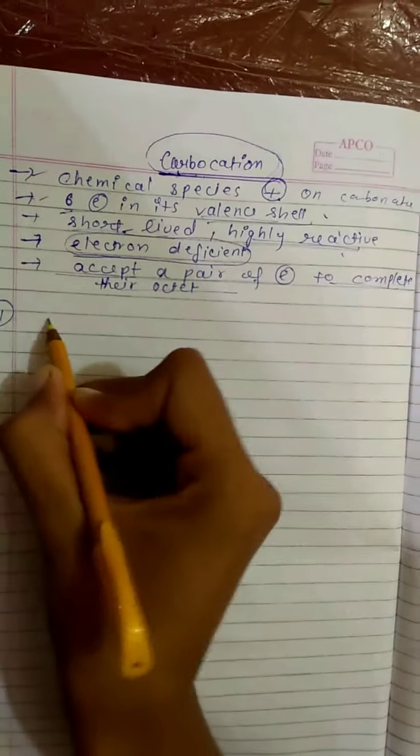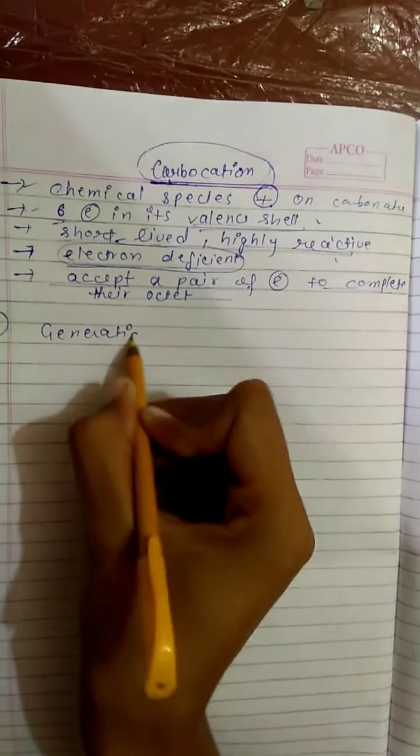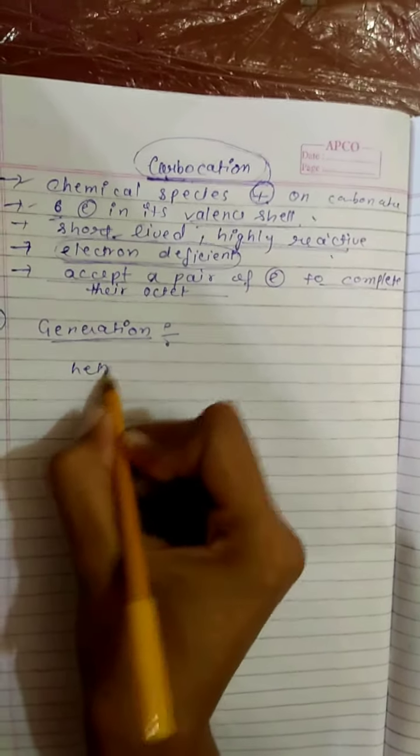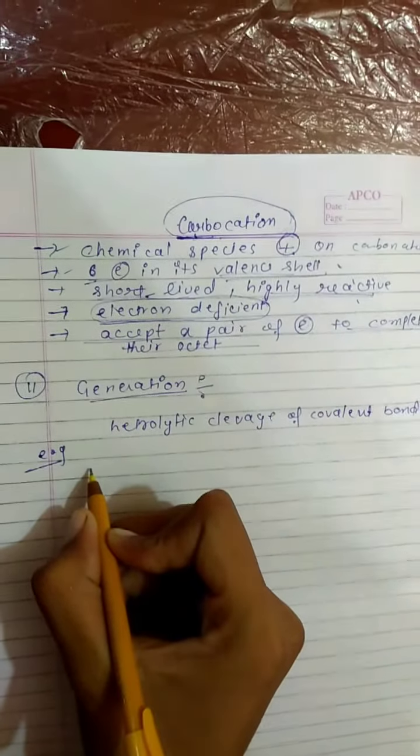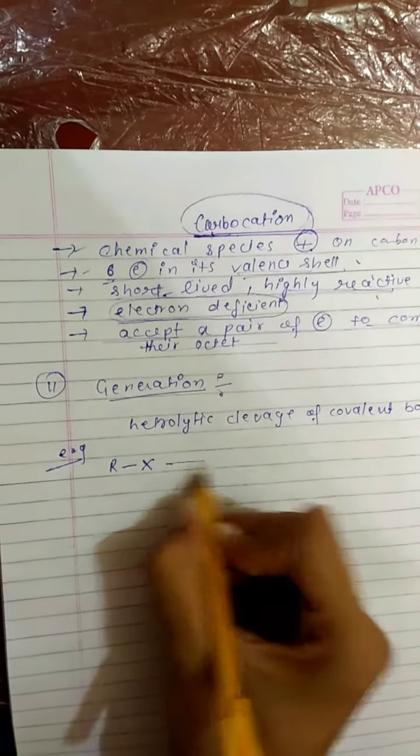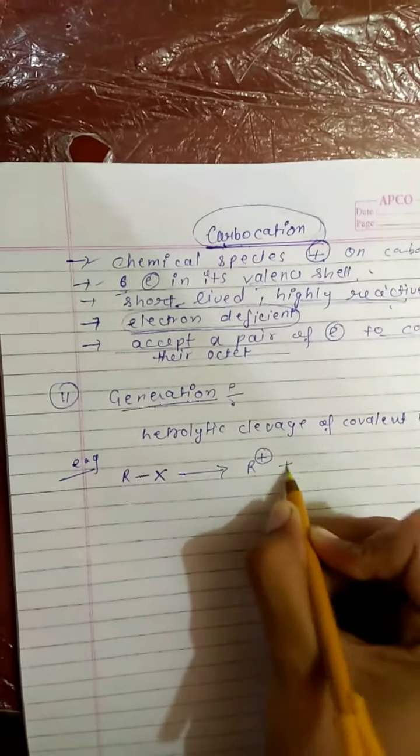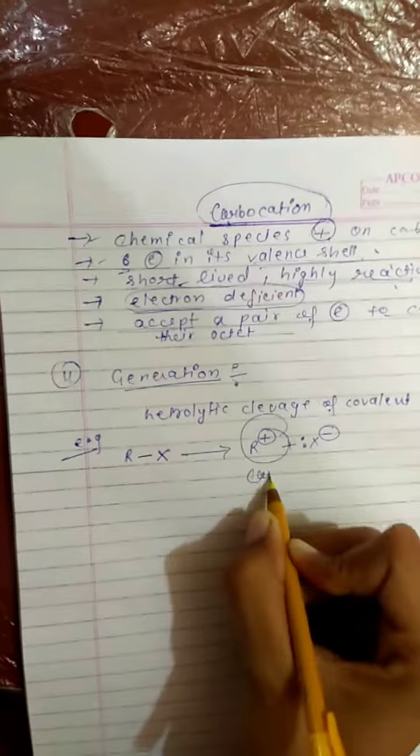Now we study about generation of carbocation. Carbocation is generated by heterolytic cleavage of a covalent bond. Heterolytic cleavage is when a covalent bond breaks down, then a leaving group like X will take both bond pair electrons and form a carbocation which is R positive.